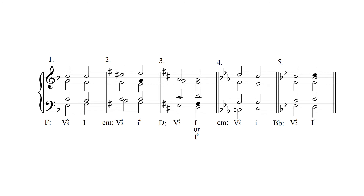Finally, resolve the chordal fifth down by step so that we have the likely chordal root doubling for the root position tonic triad.